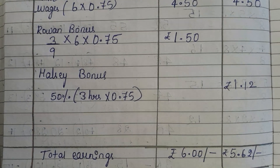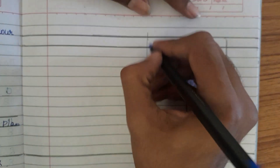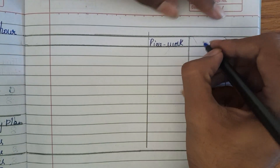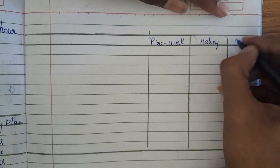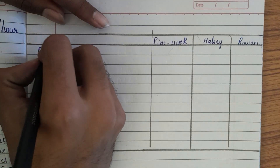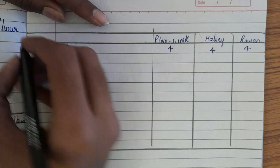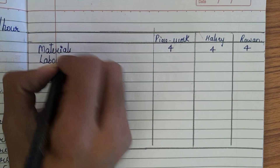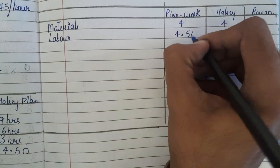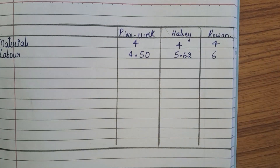Next, we need to prepare the cost sheet based on piece work, Halsey plan, and Rowan plan. Material cost of the product is 4 rupees for each plan. Labor cost: in piece rate system it is 4.50; in Rowan plan it is 6 rupees; in Halsey plan it is 5.62. Adding both, we get prime cost: 8.50, then 9.62, then 10 rupees respectively.